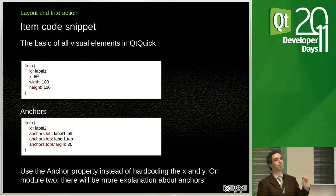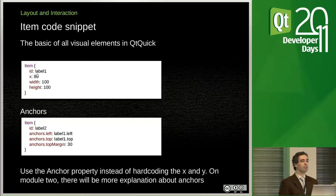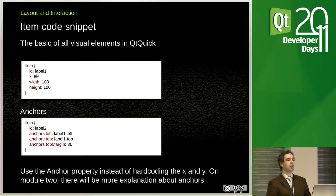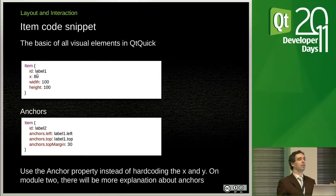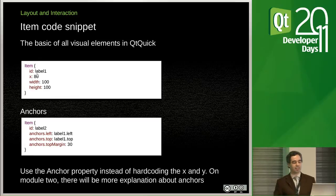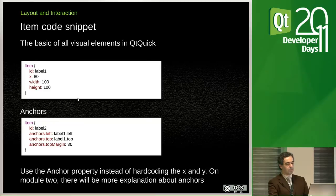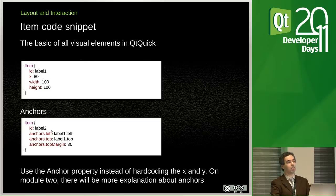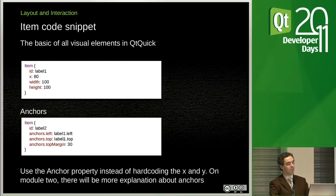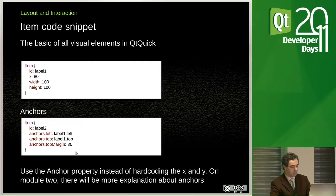Having an ID is not mandatory — elements don't need one — but it's good practice, especially if you plan on referencing them. You can give them meaningful names, because if the code gets big enough, it's easy to get lost. Elements should not have the same ID — it's confusing for you and the application, and it simply doesn't work. Then you see a little bit of the concept of binding, where a property is bound to the ID of the first item.